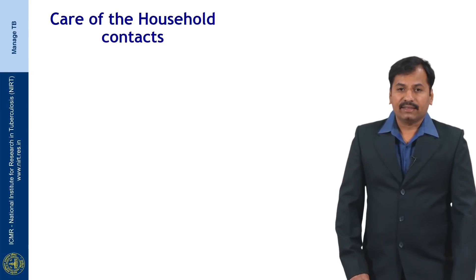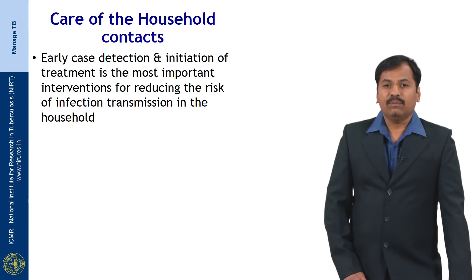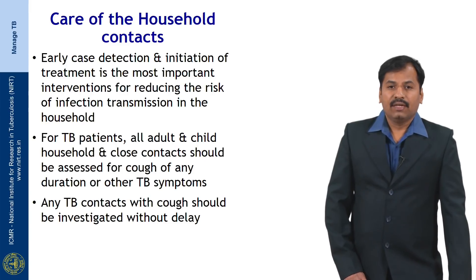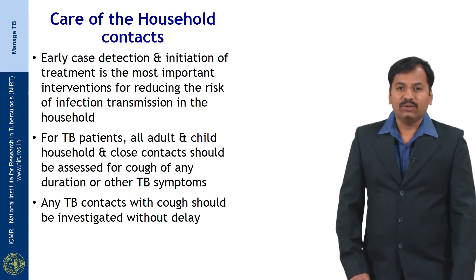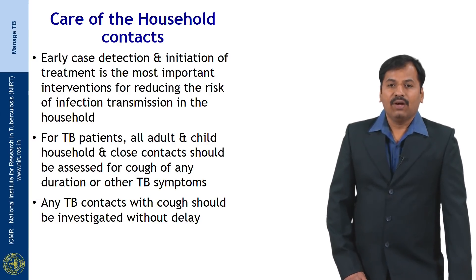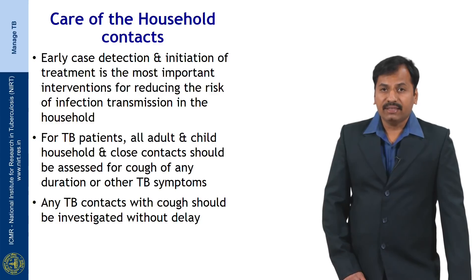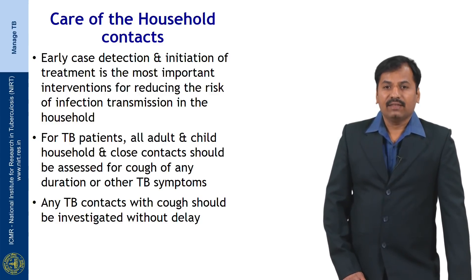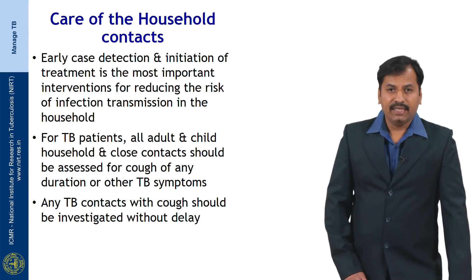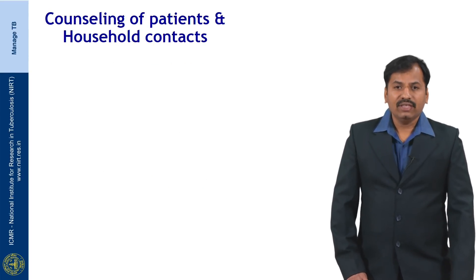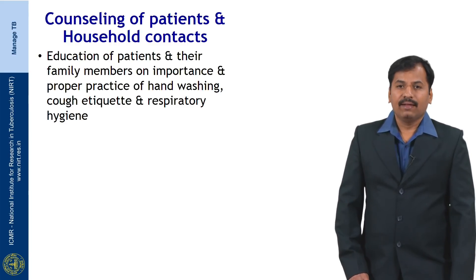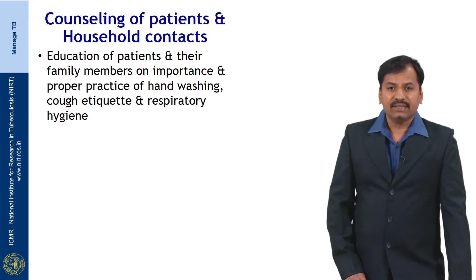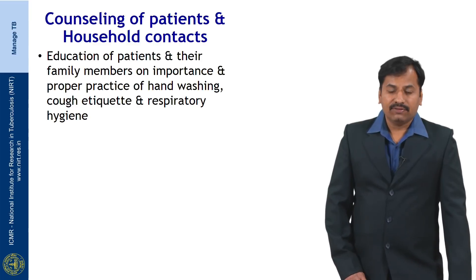Care of the household contacts — early case detection and initiation of treatment is the most important intervention for reducing the risk of infection transmission in the household. For TB patients, all adult and child household and close contacts should be assessed for cough of any duration or any other TB symptom. Any TB contact with cough should be investigated without any delay. Education of patients and their family members on the importance and proper practice of hand washing, cough etiquette and respiratory hygiene is very important and must be practiced.